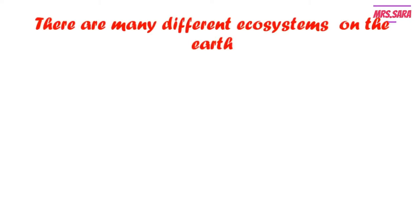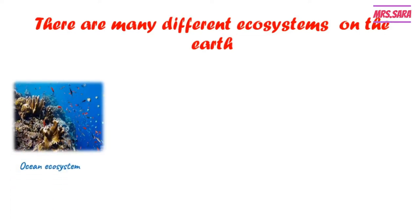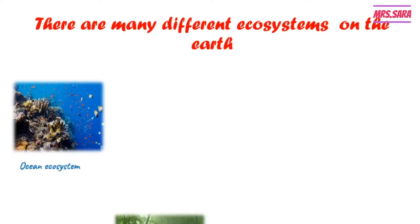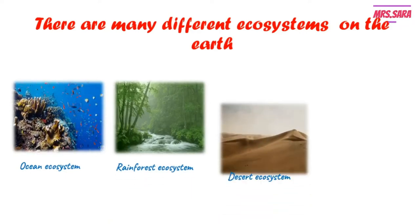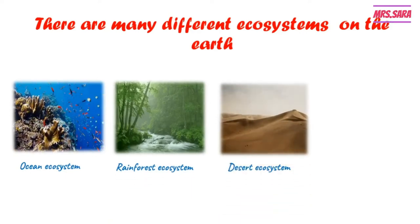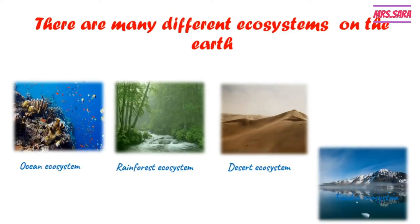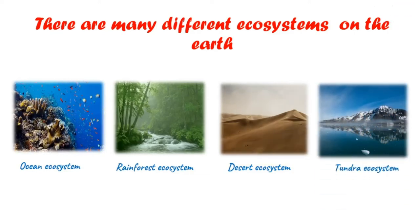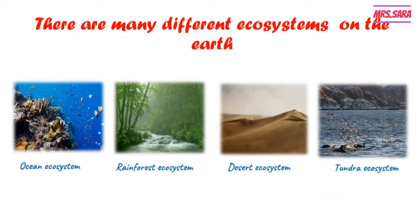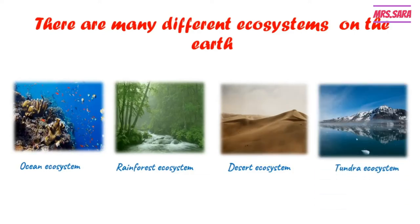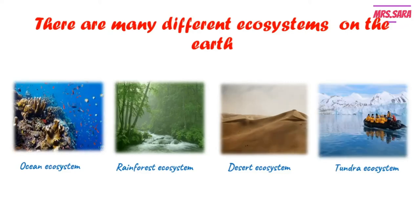There are many different ecosystems on the Earth, such as the ocean ecosystem, the rainforest ecosystem, the desert ecosystem, and the tundra ecosystem.